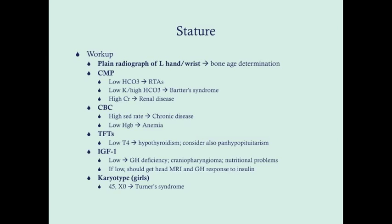The plain radiograph of the left hand and wrist helps determine bone age for comparison to chronologic age. On the metabolic profile, a low bicarb suggests renal tubular acidosis; a low potassium and high bicarb suggests Bartter syndrome; a high creatinine suggests renal disease, which can be a source of short stature.